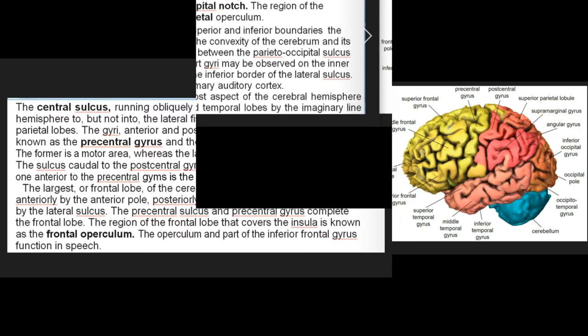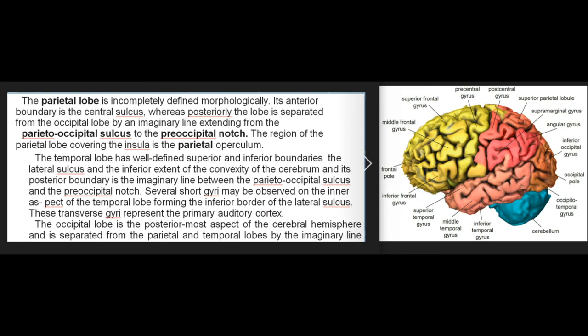The largest, or frontal lobe, of the cerebral hemisphere is bounded anteriorly by the anterior pole, posteriorly by the central sulcus, and inferiorly by the lateral sulcus. The precentral sulcus and precentral gyrus complete the frontal lobe. The region of the frontal lobe that covers the insula is known as the frontal operculum, and the operculum together with part of the inferior frontal gyrus function in speech.